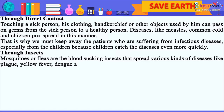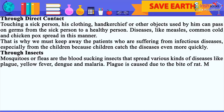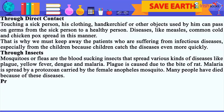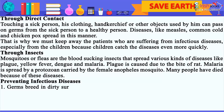Through insects: Mosquitoes or fleas are blood-sucking insects that spread various kinds of diseases like plague, yellow fever, dengue and malaria. Plague is caused due to the bite of a rat flea. Malaria is spread by a protozoan carried by the female Anopheles mosquito. Many people have died because of these diseases.